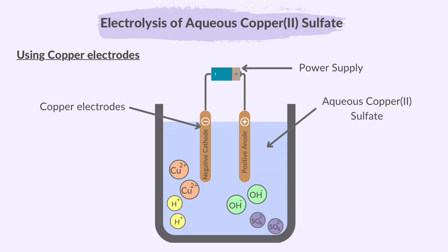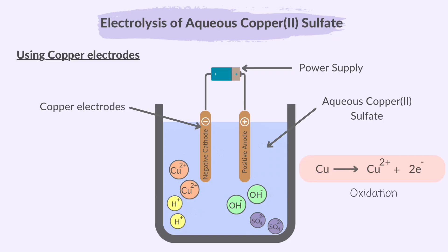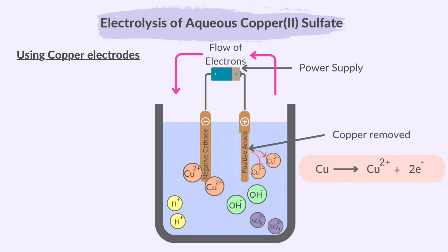In general, metals have a tendency to lose electrons and form cations. Sulfate ions and hydroxide ions are more stable with their negative charges and are less likely to give up electrons. Therefore, some copper atoms in the copper anode will lose electrons, or get oxidized, to Cu²⁺ ions. These ions cannot be part of the metal rod — they go into the solution. This causes a decrease in the anode's mass.